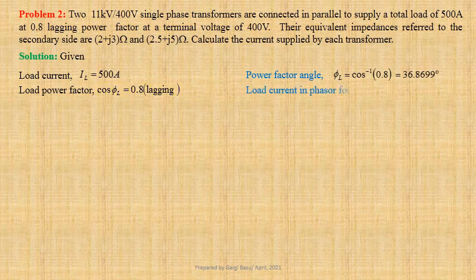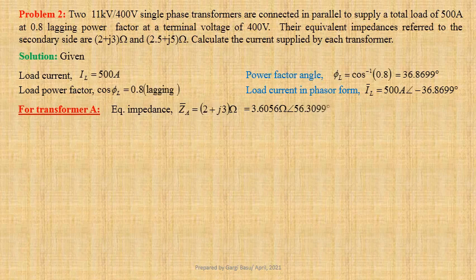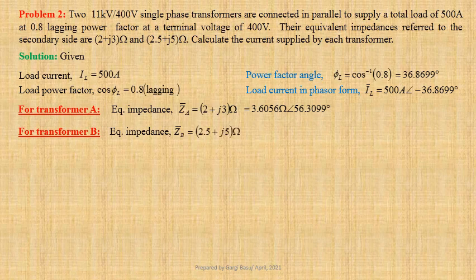Power factor angle phi L equals cos inverse 0.8, that is equal to 36.8699 degree. Load current in phasor form IL equals 500 ampere at an angle minus 36.8699 degree. For transformer A, given equivalent impedance ZA equals 2 plus J3 ohm. This may be written in polar form as 3.6056 ohm at an angle 56.3099 degree. For transformer B, given equivalent impedance ZB equals 2.5 plus J5 ohm. Let us now determine ZA plus ZB.